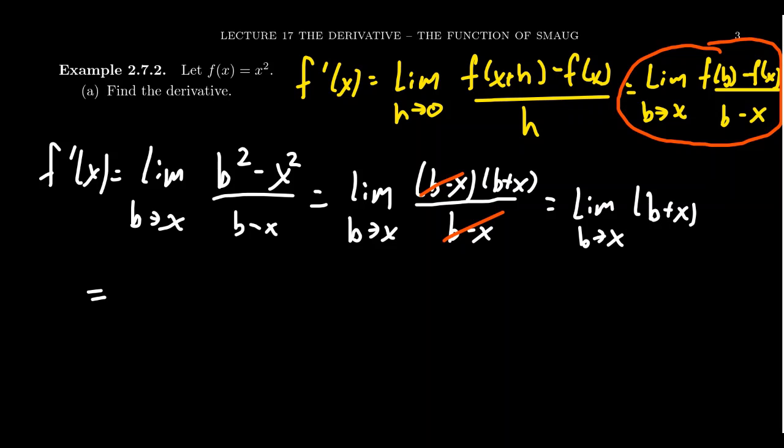So we end up with x plus x, which is equal to 2x. So this is the derivative of x squared. The derivative of x squared is 2x.